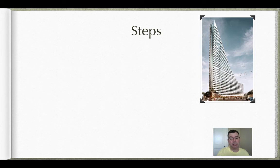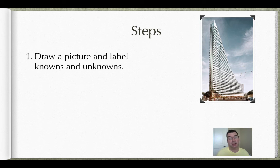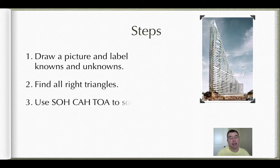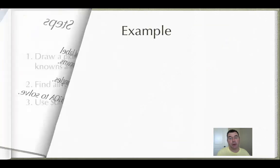There are certain steps that you need to follow when we're solving these. We need to first of all draw a picture if one isn't given to us, and we're going to label everything we know and everything that we're asked to find. We're going to find all the right triangles because that's all we know about trigonometry right now is that it exists in right triangles, and we're going to use SOH-CAH-TOA to solve it, figure out which ratio we need, and use that ratio to solve the problem.